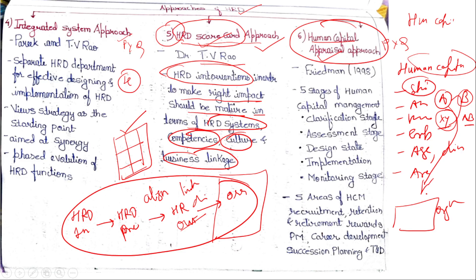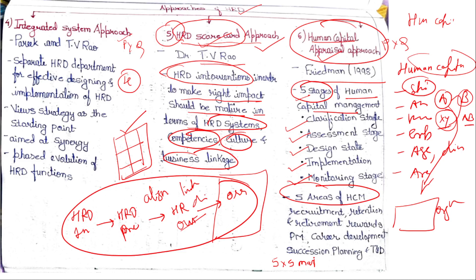Given by Fridman, the human capital appraisal approach has five stages of human capital management. When there is a human capital management process, it consists of five stages: clarification, assessment, design, implementation, and monitoring. These five stages can be combined with five areas of HCM. A matrix of five multiplied by five is created using different combinations of these five areas and five stages, through which human resource development can be done. For example, the first combination can be the clarification stage and recruitment, the second can be the assessment stage and recruitment, and so on — creating this five-by-five matrix to develop human resources.